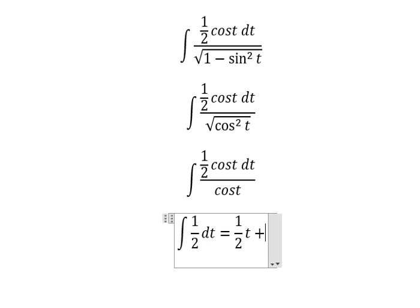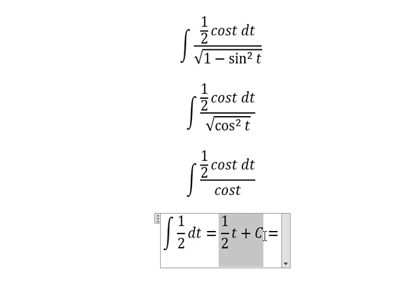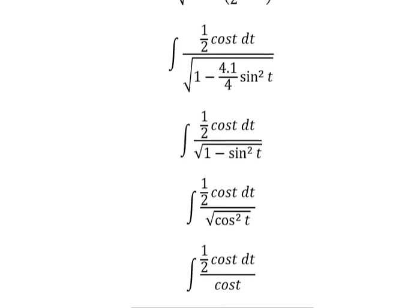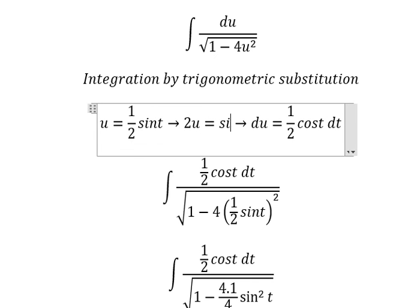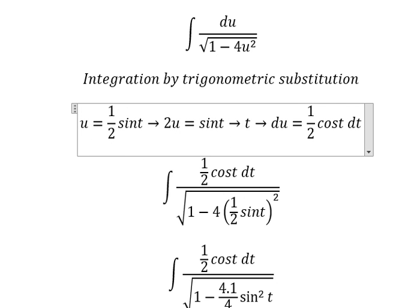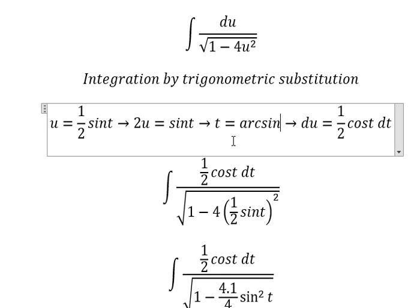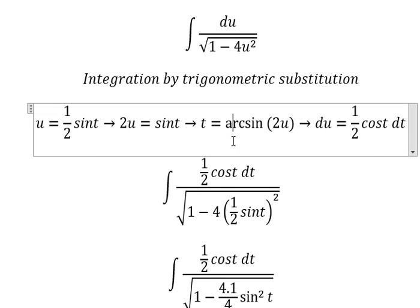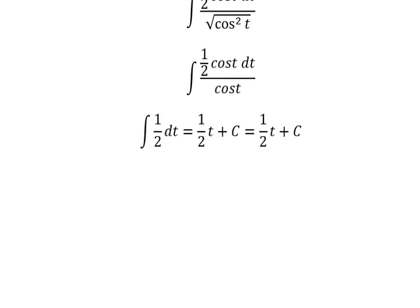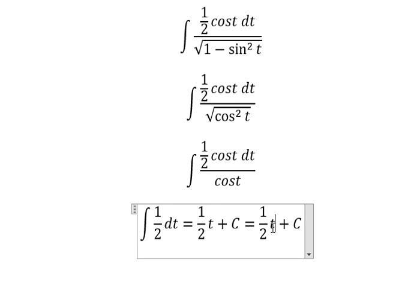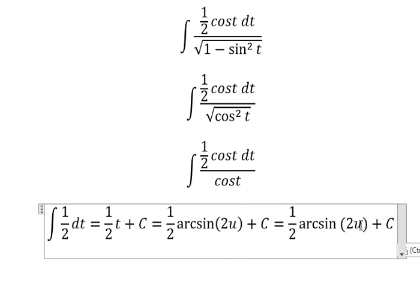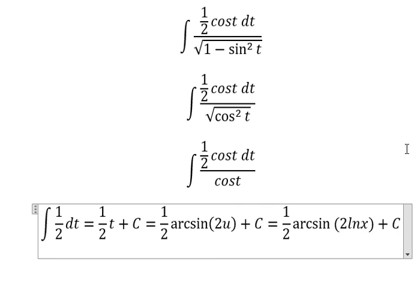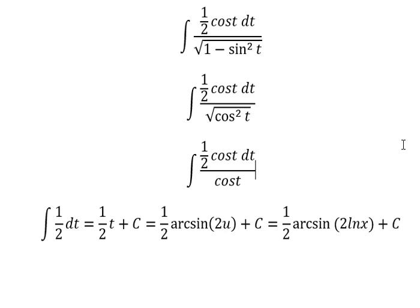For t we go back to this substitution. We multiply both sides with 2, we get 2u equals sine t, and we get t equals arcsin of 2u. So we put this back in here. And we know that u is ln x. This is the end, thank you for watching.